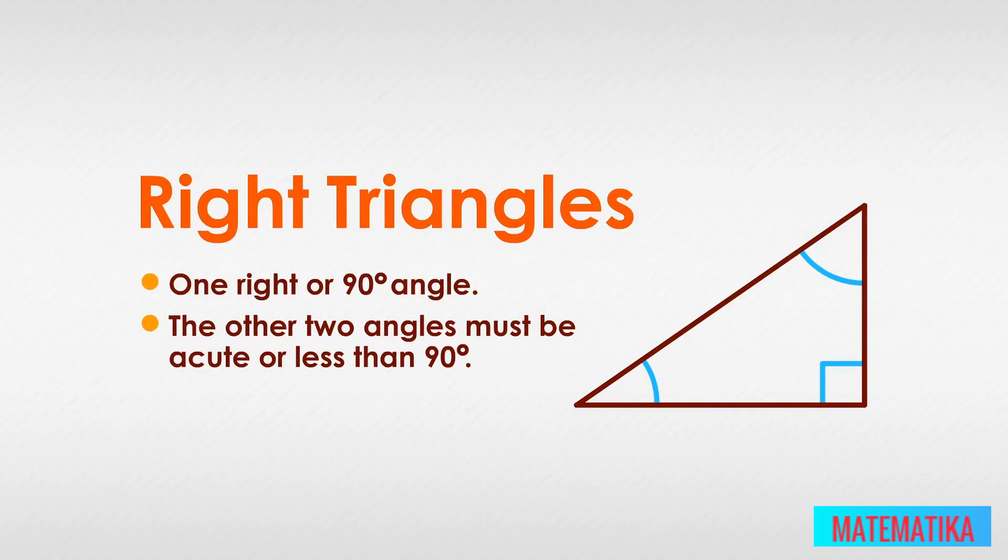We know this because all interior angles of any triangle must add to 180 degrees, and subtracting the one right angle from 180 degrees leaves only 90 degrees to be shared by the two remaining angles, making both of them acute angles. Now that we have right triangles right in our heads...